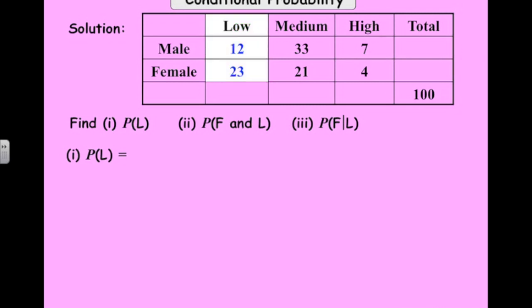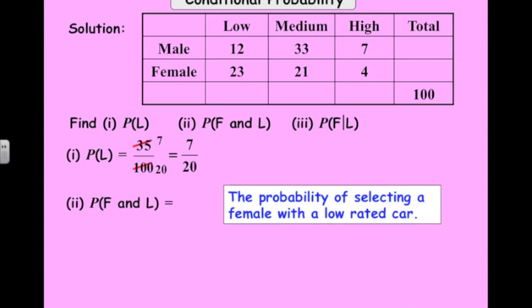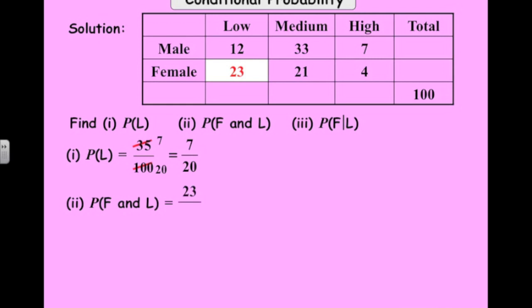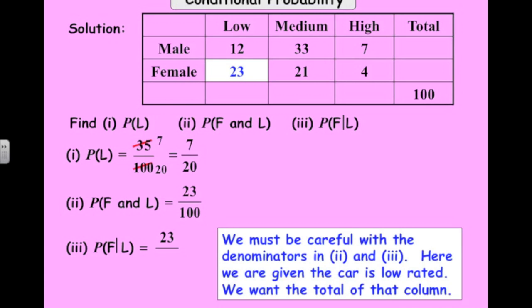So we don't need a Venn diagram or a tree diagram or anything. We can just look at this table. So if I do some calculations here, the probability someone owns a low-rated car, there's 35 people out of the 100 own a low-rated car. So 35 out of 100. So cancel down, 7 out of 20, or you could write 0.35 if you wanted. What's the probability that someone's a female and they own a low-rated car? So that's 23 people out of the 100 in our survey, or 0.23 if you want to write it as a decimal. And the last part, what's the probability someone's a female, given that they own a low-rated car? So given that they own a low-rated car, that means we're only dealing with this 35 people. 23 of them are females. So the probability is 23 out of 35.